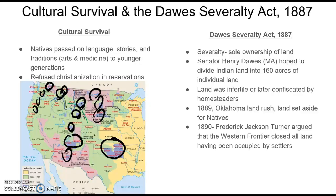Missionaries were sent to the reservations to try to Christianize Native Americans, but Native Americans refused, and that was a form of keeping their culture alive. Right before the Indian Wars ended, in 1887, we have the Dawes Severalty Act. Severalty means sole or individual ownership of land. The author was Senator Henry Dawes of Massachusetts. He hoped to divide Indian reservations into 160-acre individual plots — a strange offer for Native Americans, who were not used to private ownership but rather communal land. The land given to some Native Americans was infertile, and fertile land was later confiscated by homesteaders moving west.